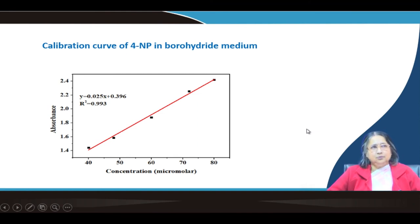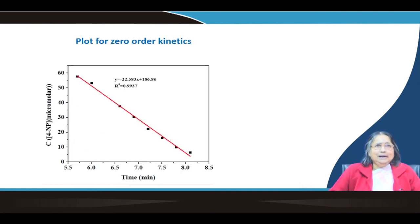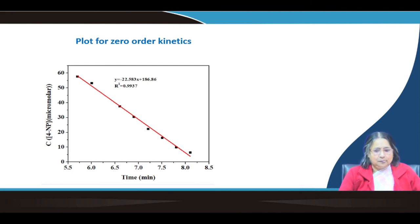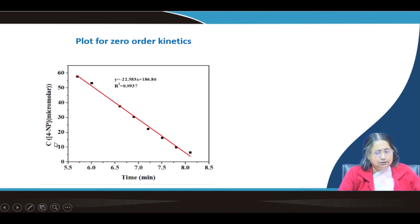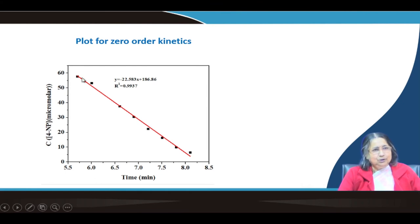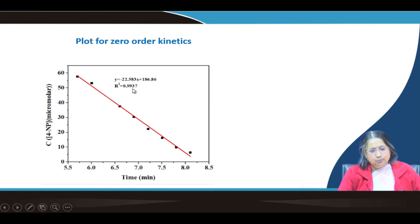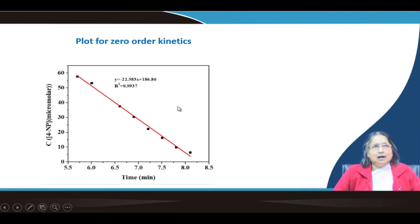We collected data at different times for 4-nitrophenolate after starting the reaction and recorded absorbance values in a table. Converting absorbance to concentration using the calibration curve, we then plot C versus time. For zero-order kinetics, a plot of C versus time should give a straight line. We get a very good straight line with R² = 0.99, along with the slope. So the zero-order linear plot gives excellent correlation.